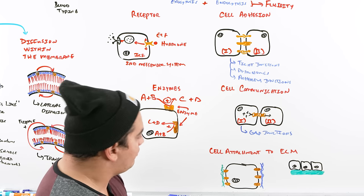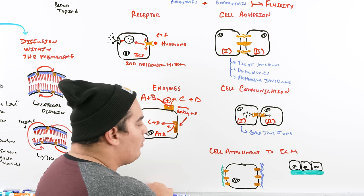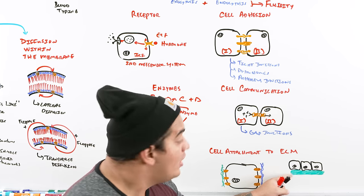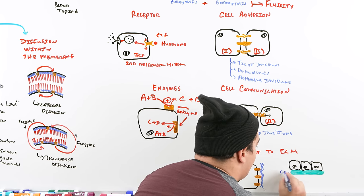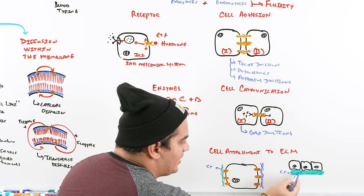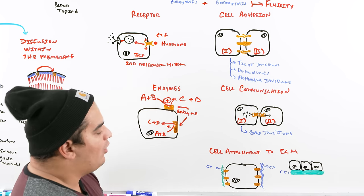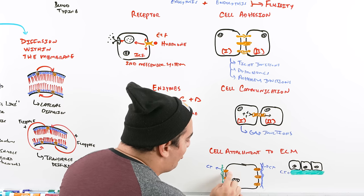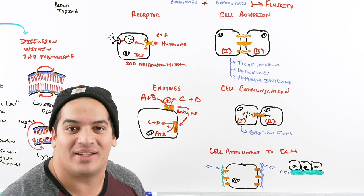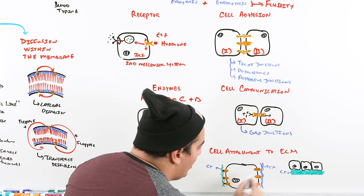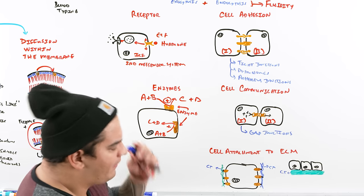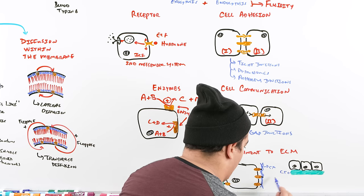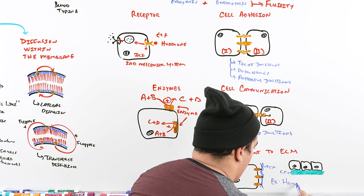The last function of membrane proteins is cell attachment to the extracellular matrix. Epithelial cells, for example, connect to nearby connective tissue structures. The proteins of the cell membrane link with the connective tissue of the extracellular matrix — such as the basal lamina — providing structural stability. A great example of this is hemidesmosomes, which allow the cell to anchor to the extracellular matrix.